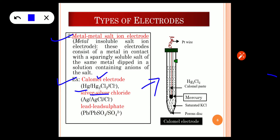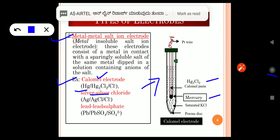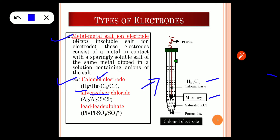Looking at the construction of the calomel electrode: in the inner tube, mercury metal is kept. Mercury is in contact with the sparingly soluble salt of the same metal — mercurous chloride. This is dipped in a solution containing anions: the solution present inside is saturated KCl, and the anion is Cl⁻. Saturated KCl produces Cl⁻ anions, and mercurous chloride also produces Cl⁻ anions. So this is how the metal-metal salt ion electrode is constructed — mercury (metal) in contact with mercurous chloride (sparingly soluble salt) in a solution of KCl providing the anions of the salt.